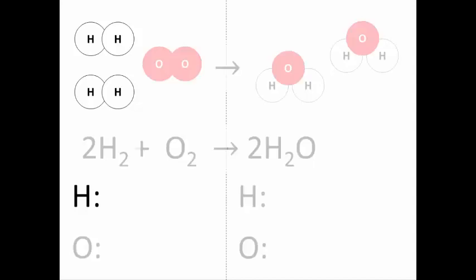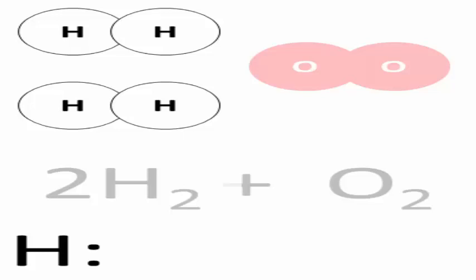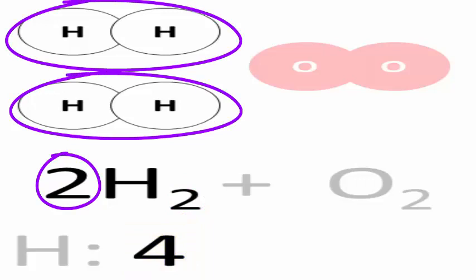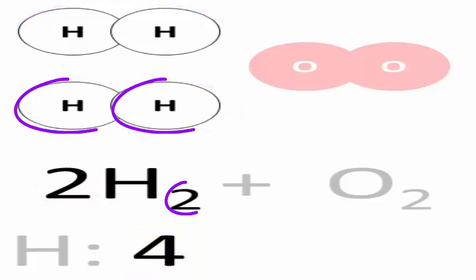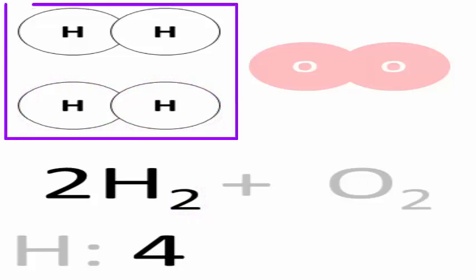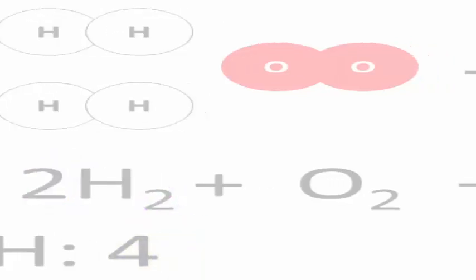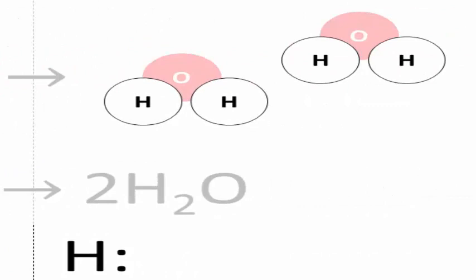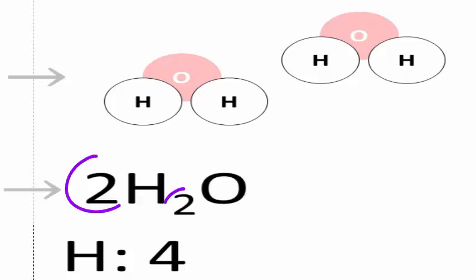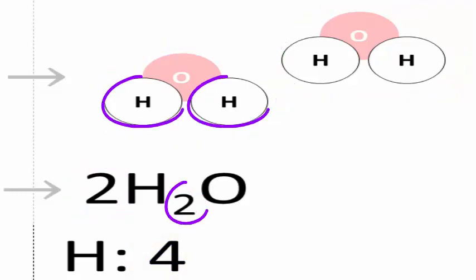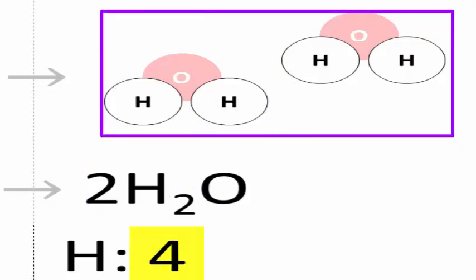How many hydrogen atoms do we show in this picture amongst the reactants? You can count them and see it's four. Or you can look at the formula: it's two times two, which is four. There are two molecules of hydrogen gas and in each of them there are two hydrogen atoms, so in both of them there are four hydrogen atoms. What about the number of hydrogen atoms amongst the products? We can see from the picture it's also four, and from the formula: two times two equals four. There are two molecules of water and in each of them there are two hydrogen atoms, so altogether there are four hydrogen atoms.